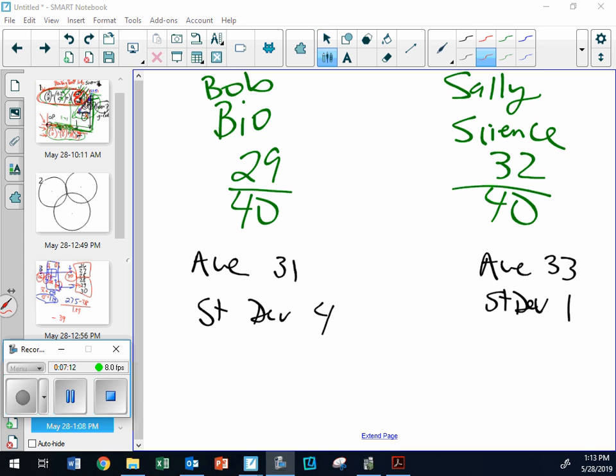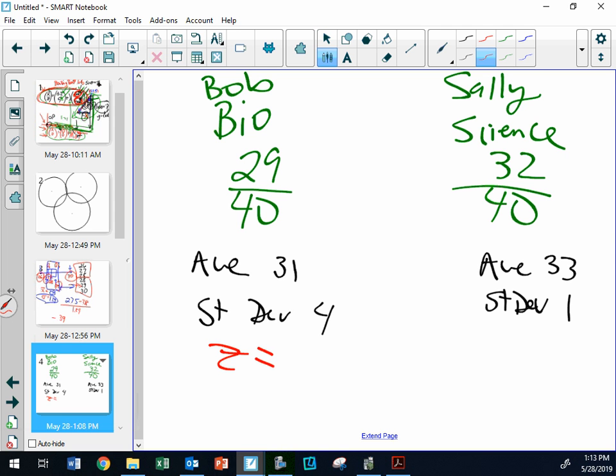Z score for Bob. Negative 0.5. Did he do well or not? Not great, because was he below or above average? Below average. How far below average? Half a standard deviation. Then, Sally's score. Negative 1.0. What does that mean? One standard deviation below.